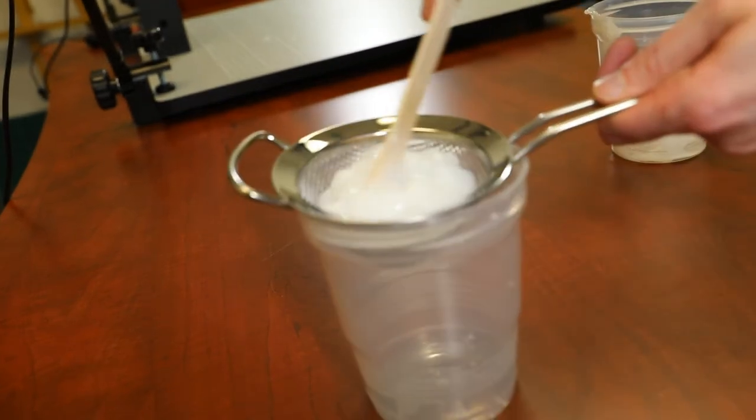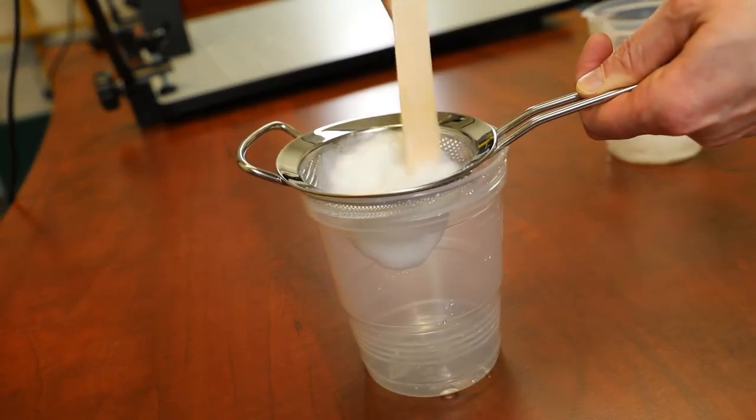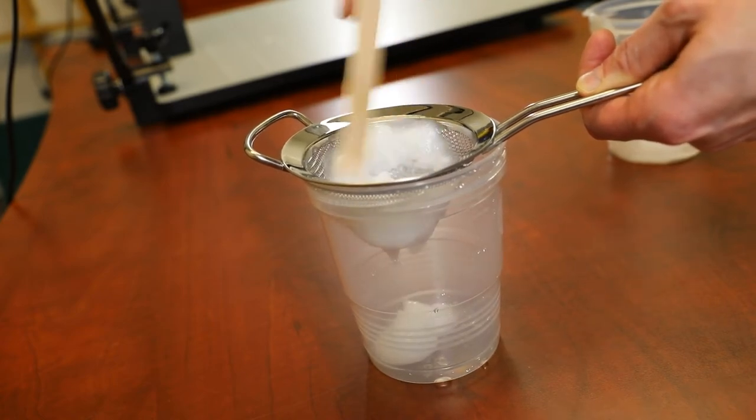Now this may seem like a lot of trouble just to produce the same stuff that you used to smear on balloons in grade 3, but we use the wheat starch and paper combination because one, it's reversible.